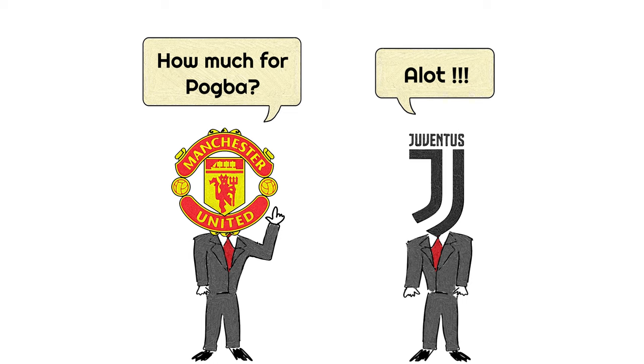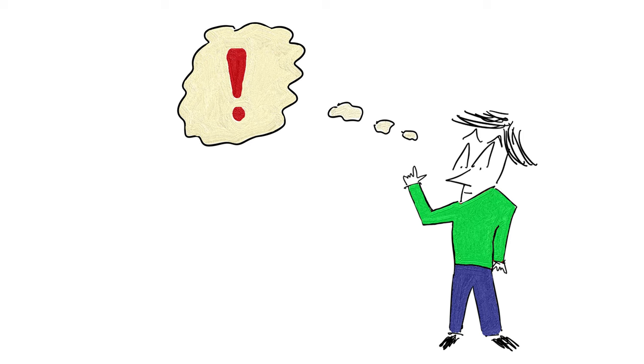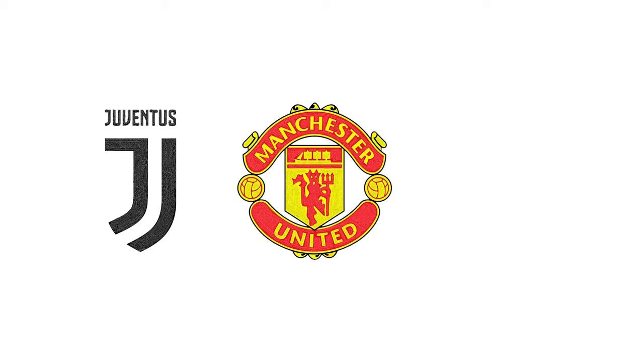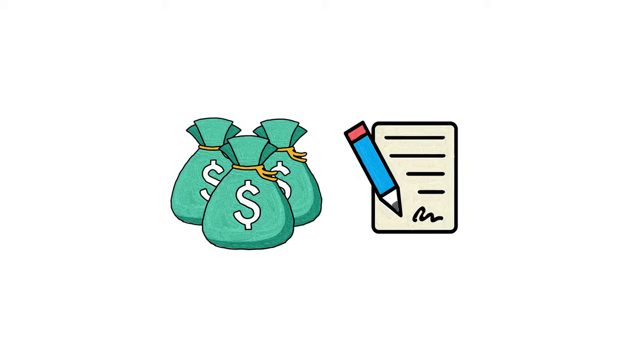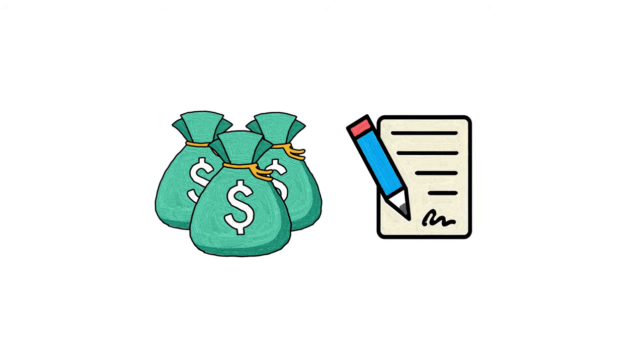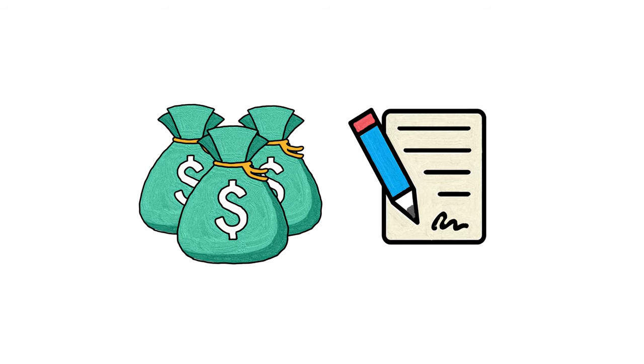When Paul Pogba moved from Juventus to Manchester United for more than 100 million euros and signed a five-year contract, it was later revealed that every party in the deal paid him. The selling club, Juventus, the buying club, Manchester United, and Paul Pogba himself. Not just that, but they paid him extremely well, close to 50 million dollars between them.